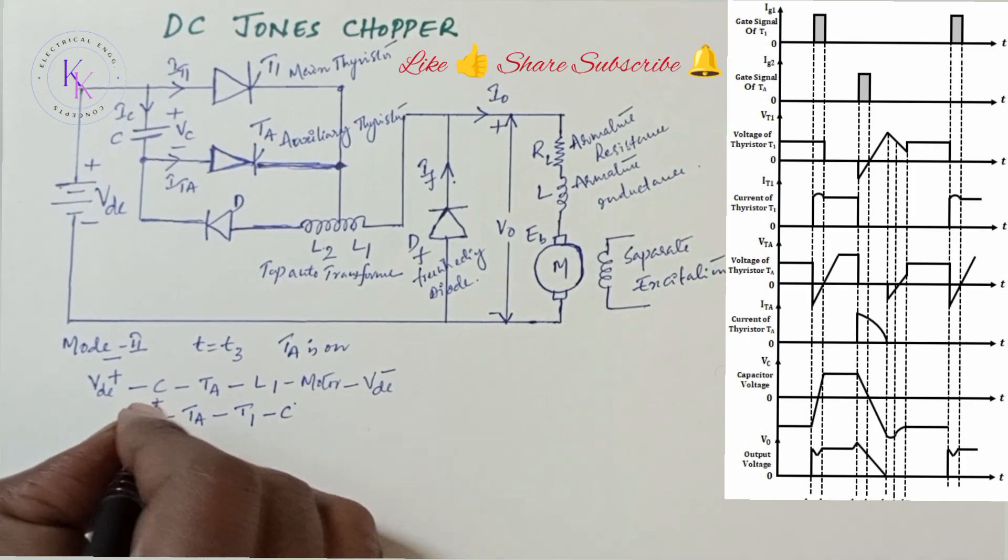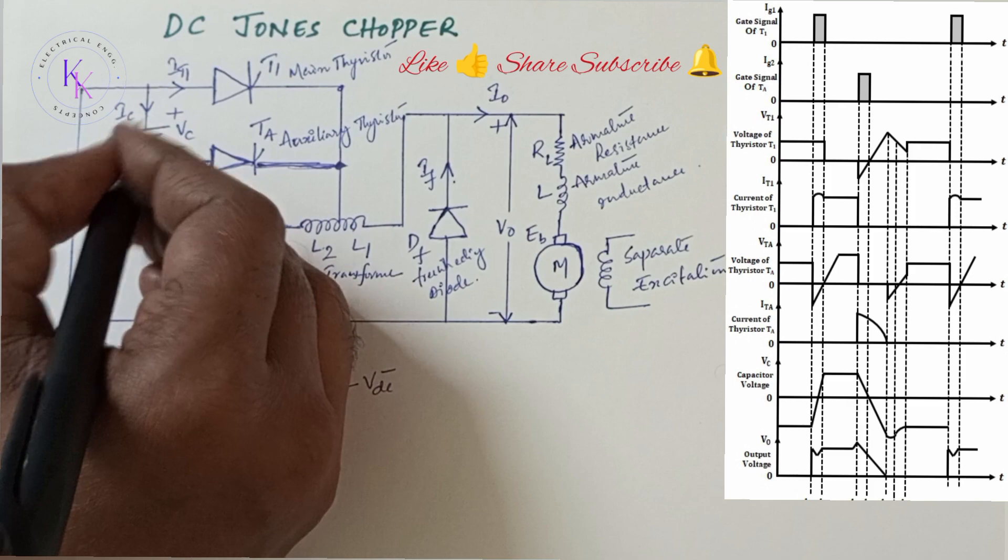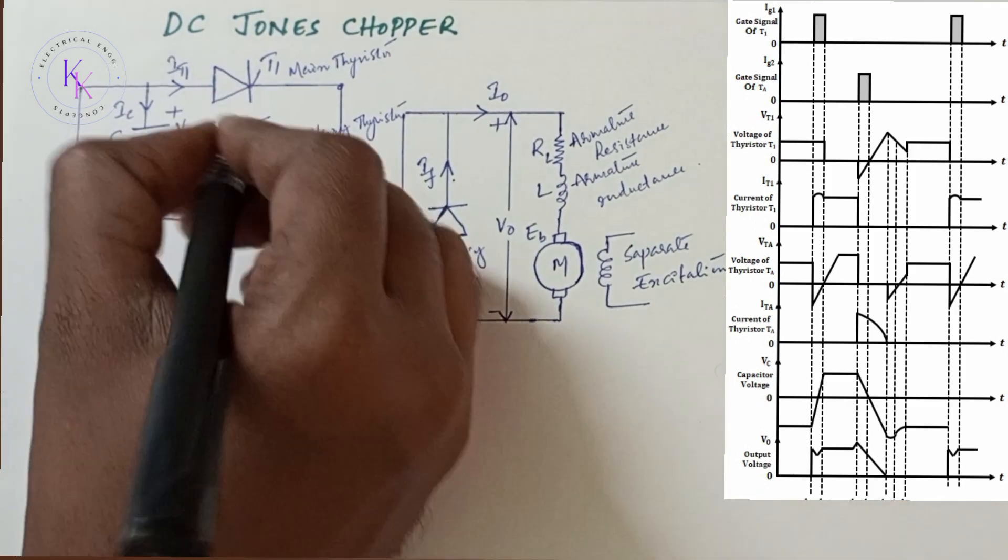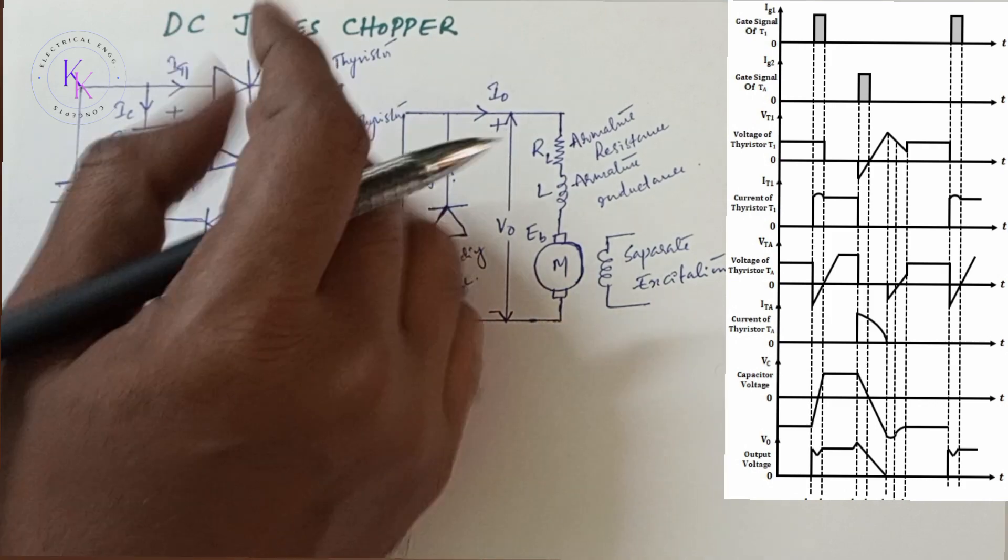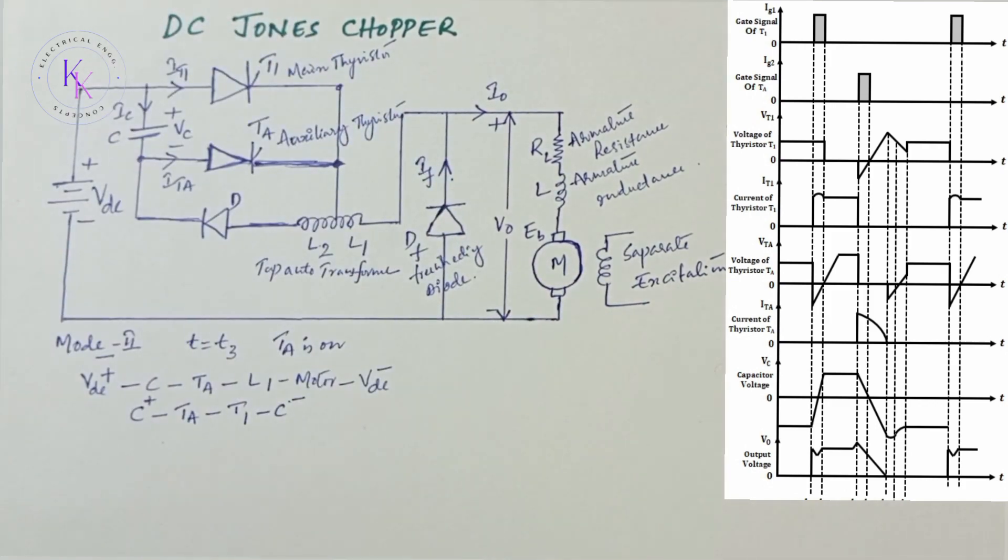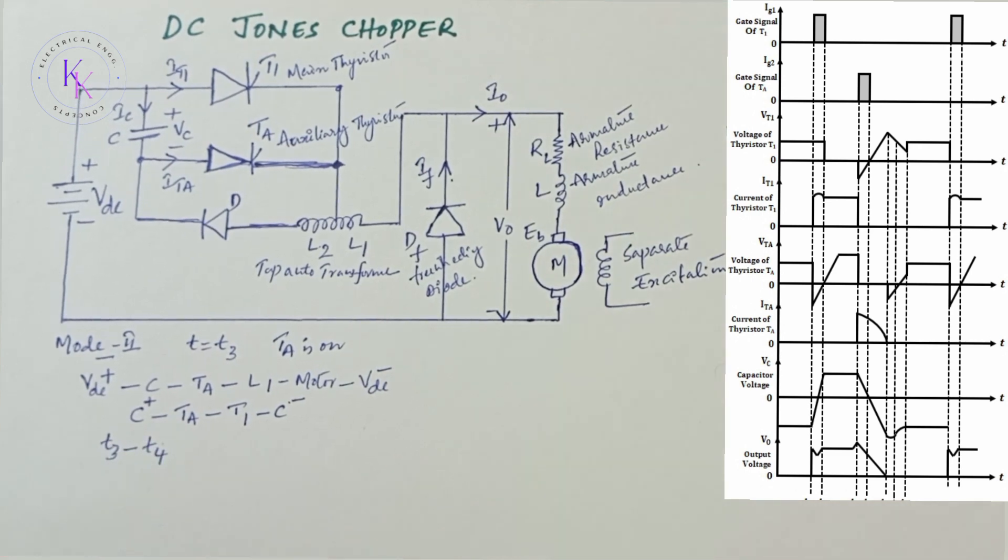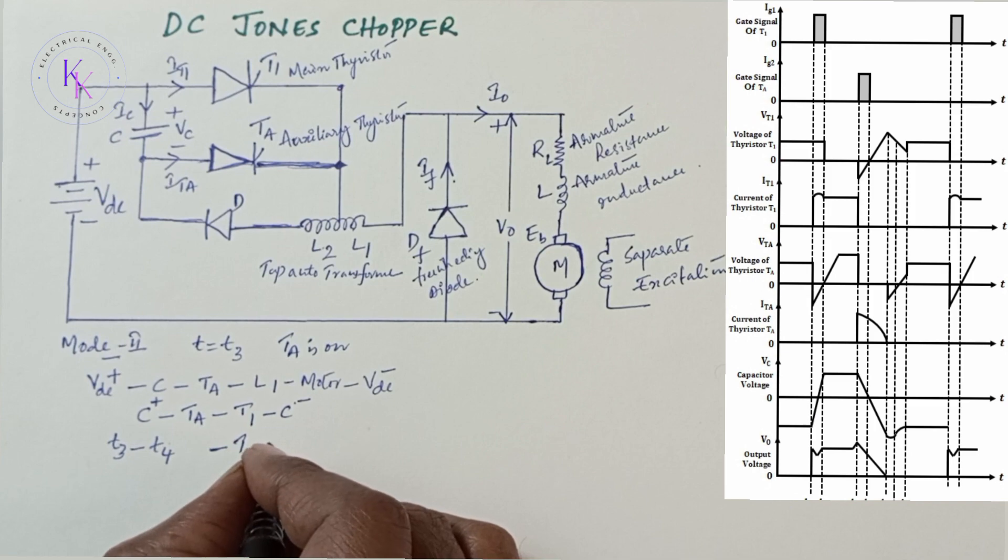Since the polarities are reversed during mode 1, current flows in anti-clockwise direction through TA and T1. Due to the discharge of capacitor C, a reverse voltage appears across thyristor T1 between times T3 and T4, hence thyristor T1 is turned off.